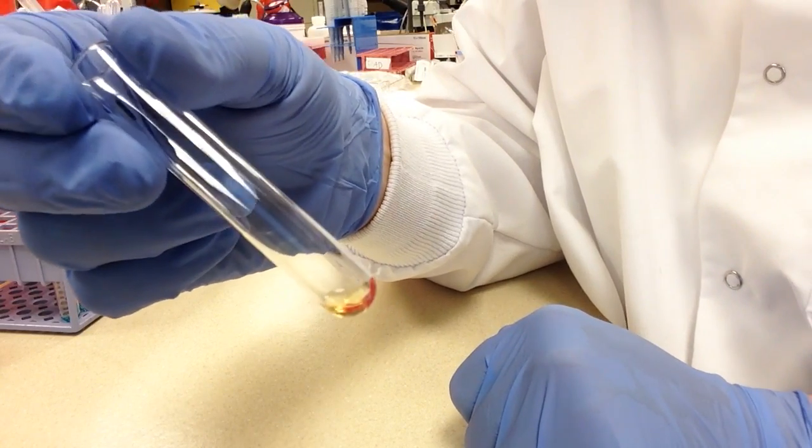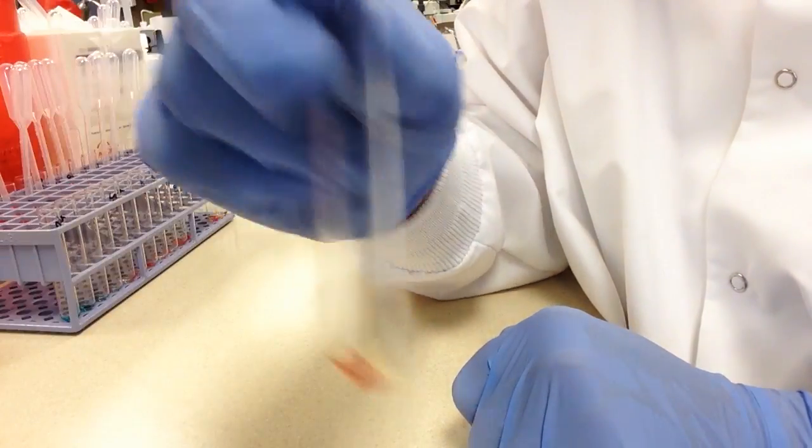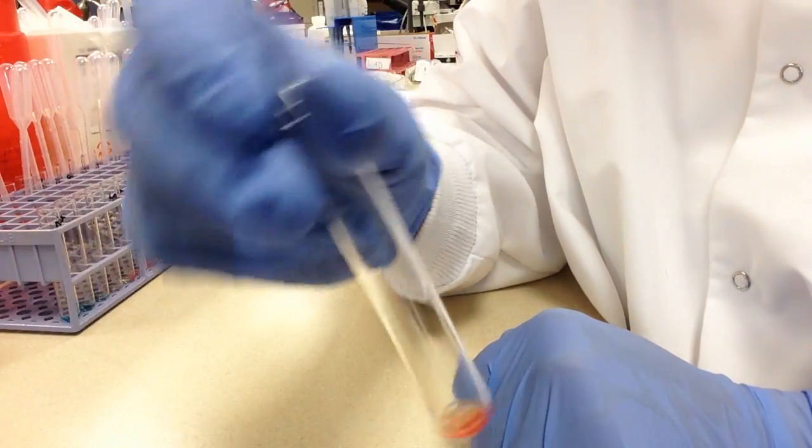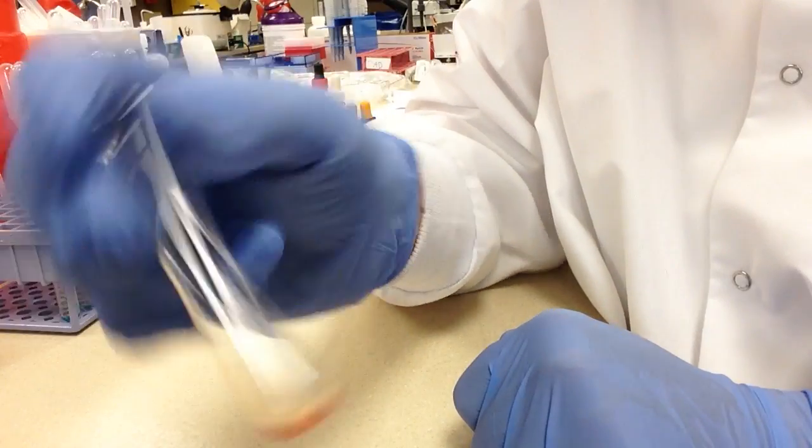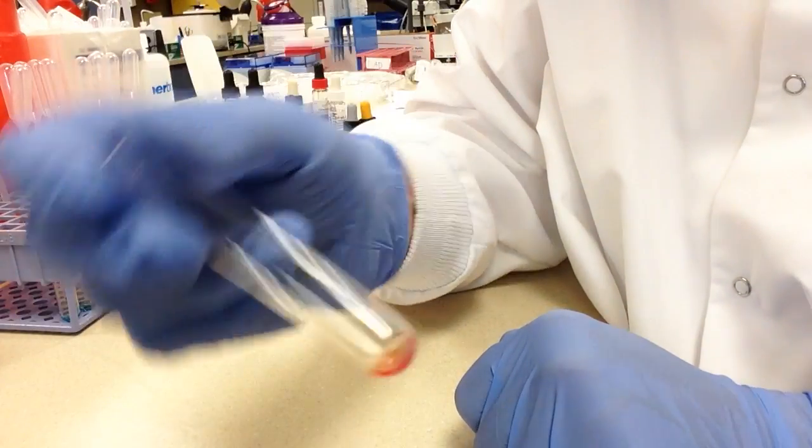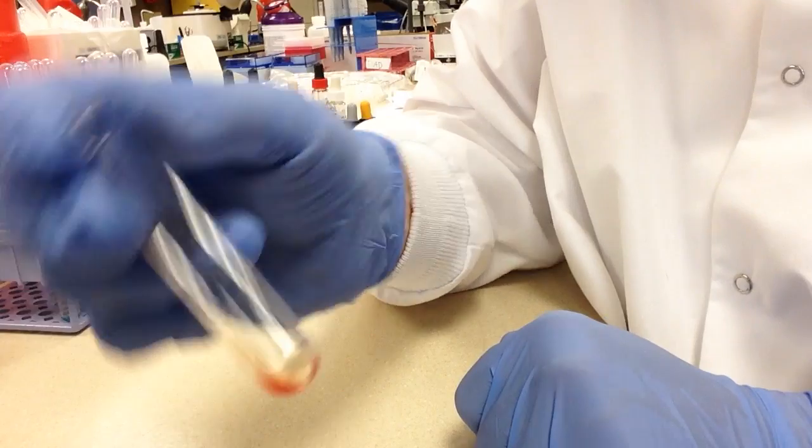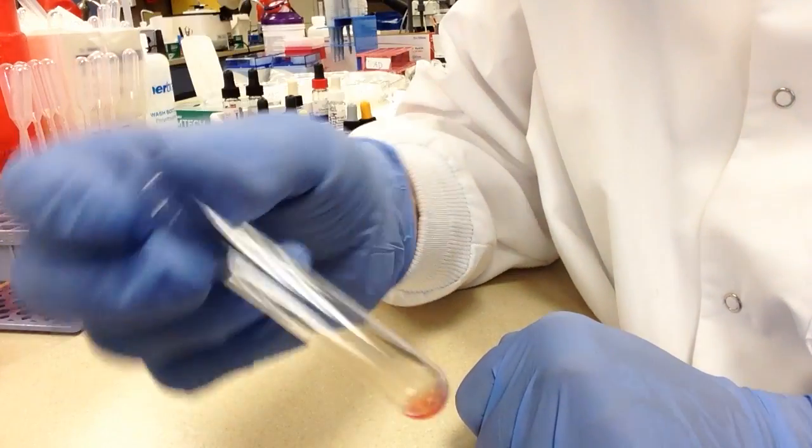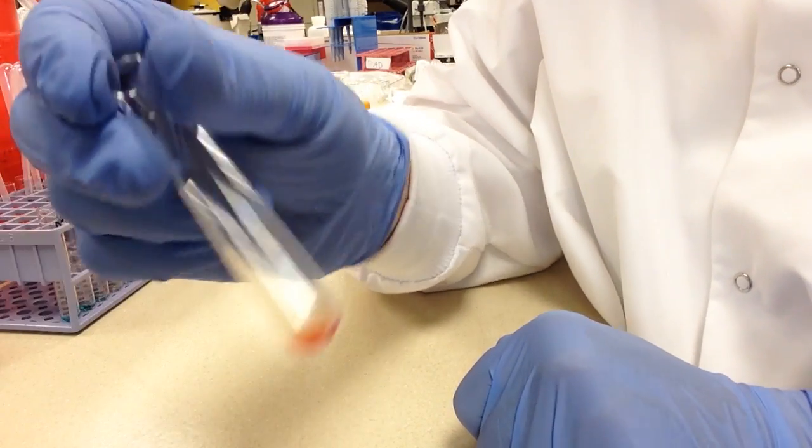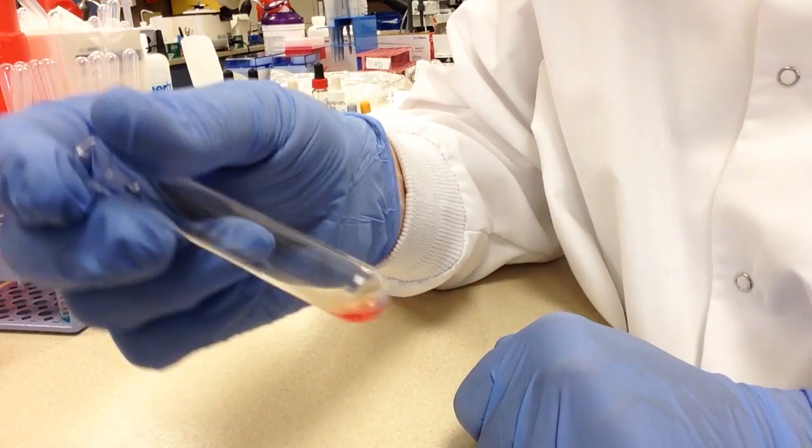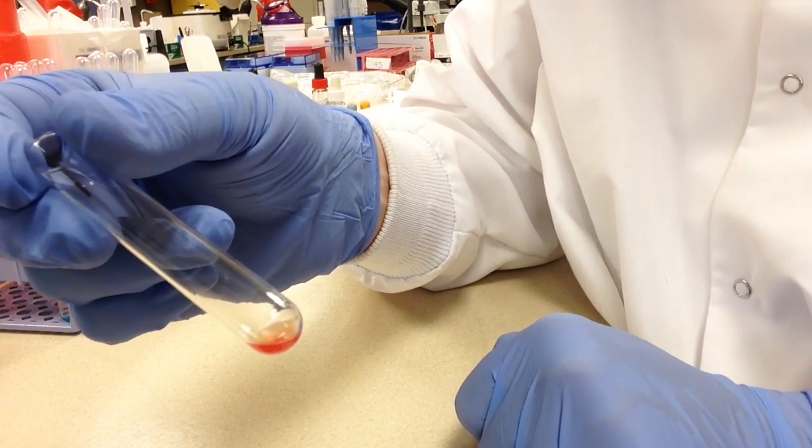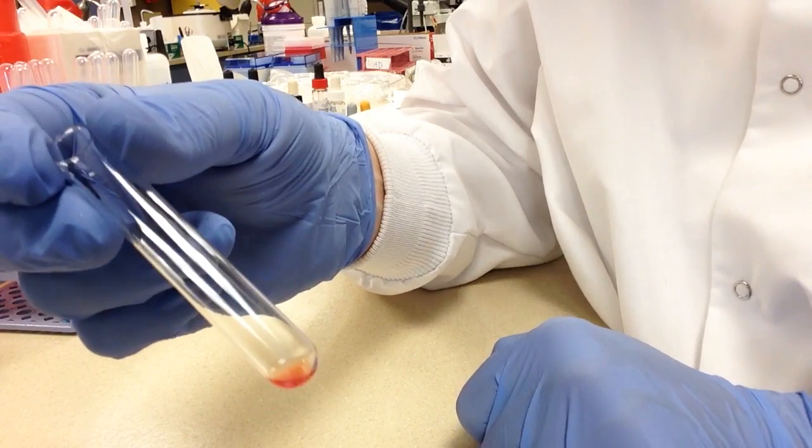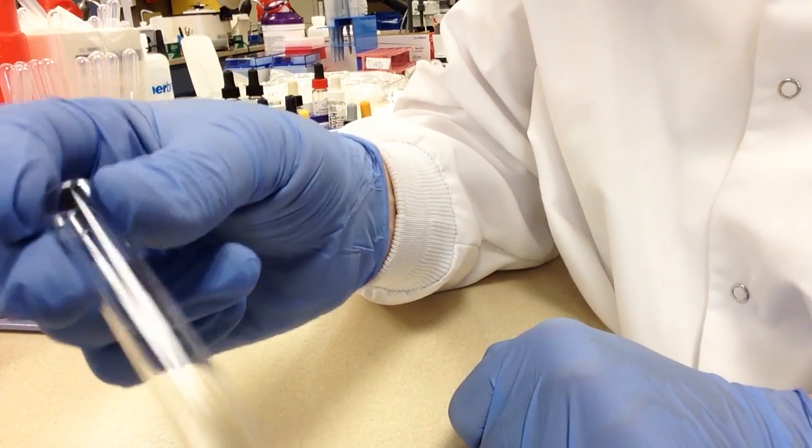So the first method is the swirl and tilt. This is very easy in the sense that it's not very violent. Typically if you have weak reactions they are not going to be broken up in this method. When I'm tilting I'm looking for agglutination. We would normally be reading them with a blood bank mirror which allows us to look at the reaction from the bottom. And we will be doing that once we start doing our graded reactions.